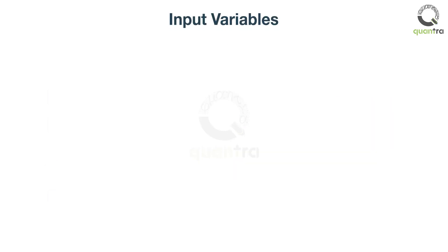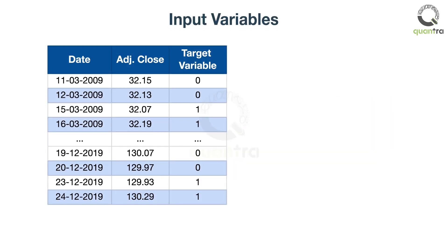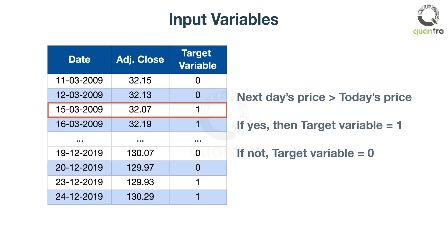Since Rob wants the ML algorithm to predict when to go long on JP Morgan, he marks the days when the next day's price is more than today's price as one, and the rest of the days as zero. This is his target variable, or what his ML algorithm will try to predict.